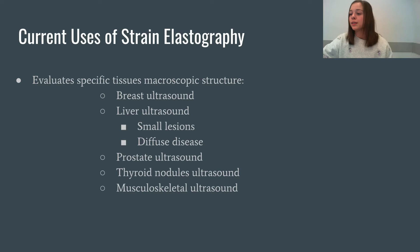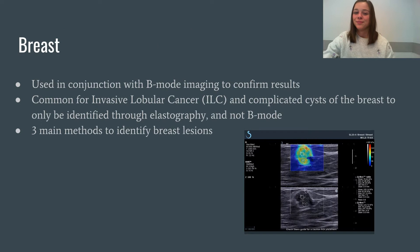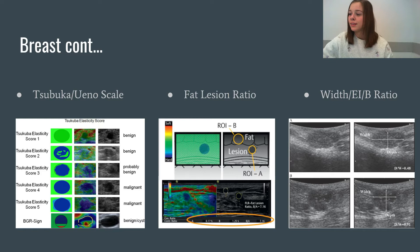Breast elastography is one of the most common uses for strain elastography. It is used in conjunction with B-mode imaging in order to confirm results. However, invasive lobular cancer and complicated cysts in the breasts are solely identified using elastography since they are not visible in regular B-mode imaging. There are three main methods to identify breast lesions. The first is the Tsubaca scale, which is a five-point color scale that produces the color pattern based on breast lesion stiffness relative to the background tissue. As the score increases, the probability for malignancy increases.